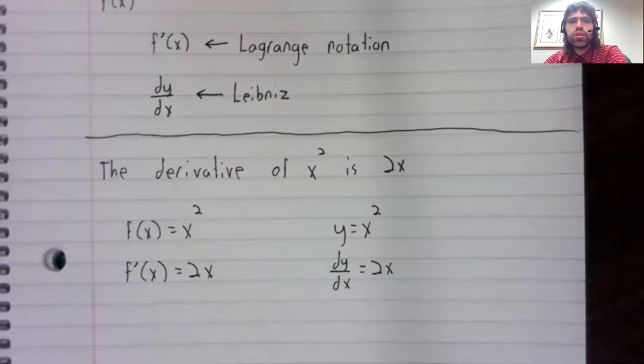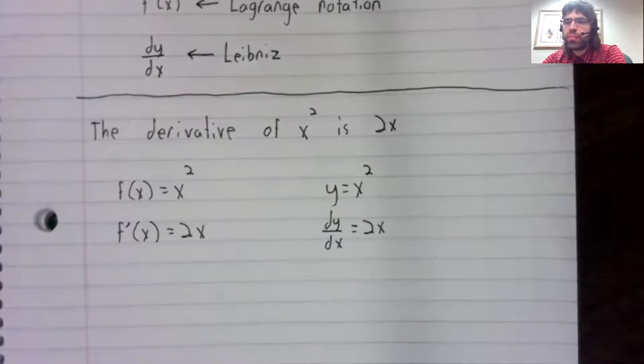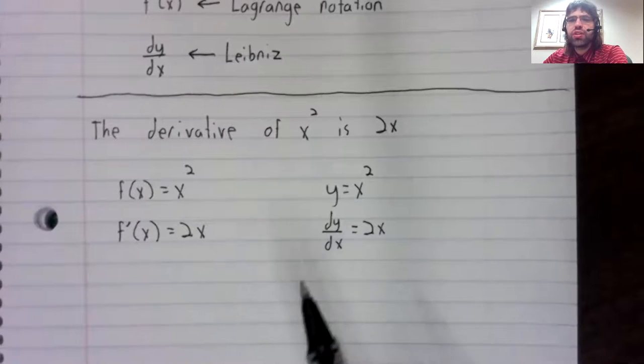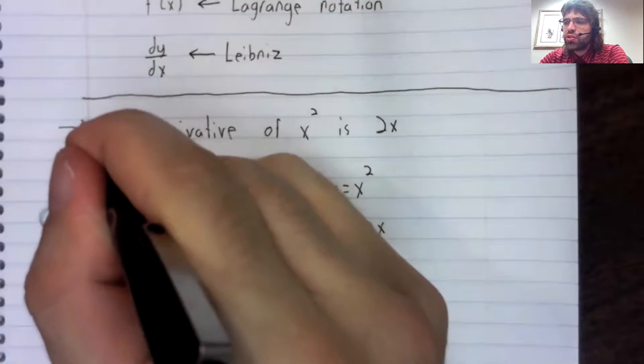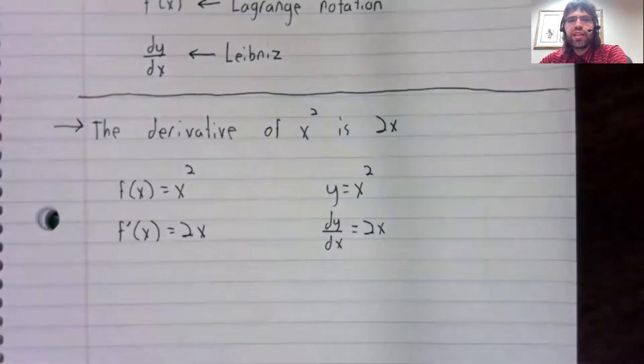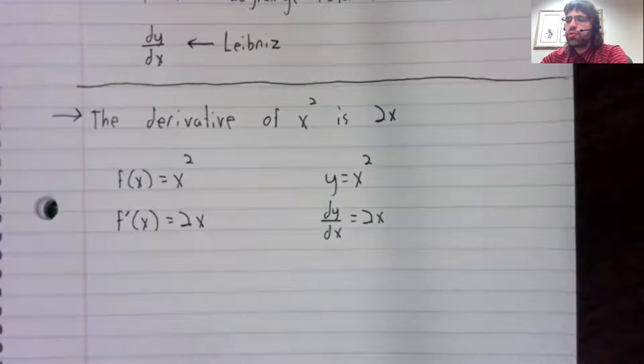Leibniz notation is in some ways kind of clunky, because it's not function notation. What Leibniz notation is good for is letting us compactly write statements like that.